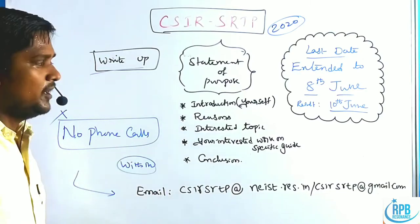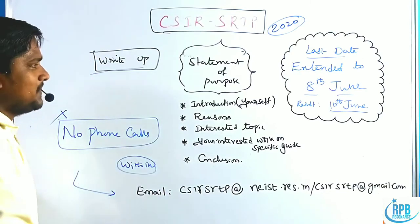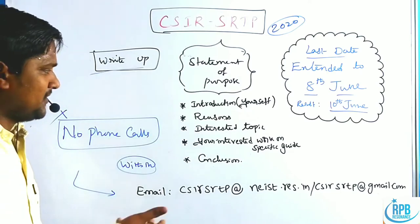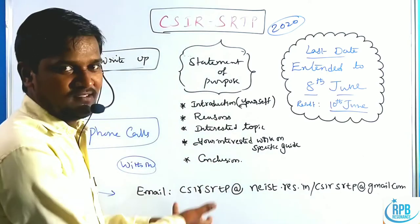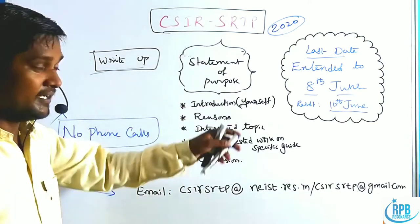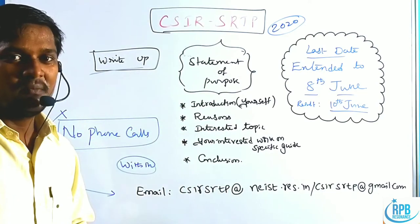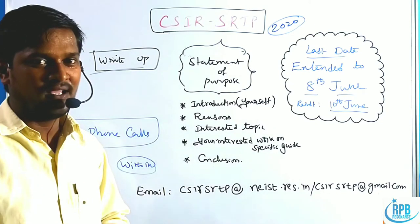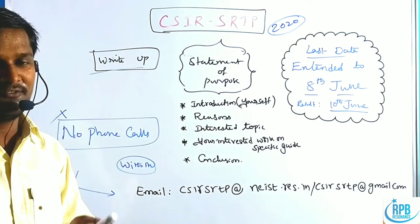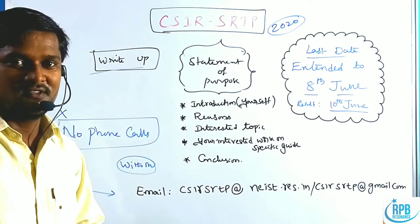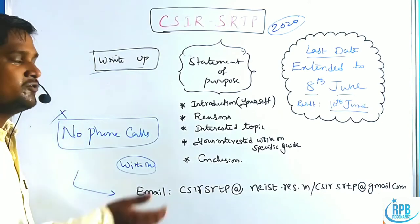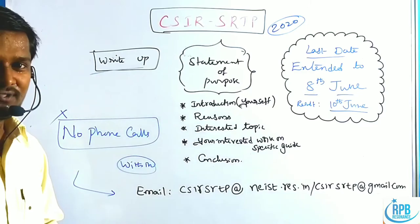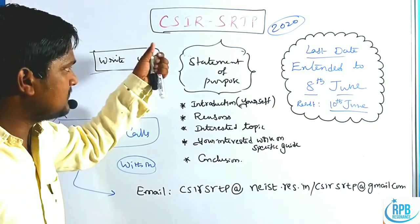The statement of purpose contains five main basic paragraphs. The first one is an introduction — mention your name, where you are from, where you are doing your previous work or what your study is. The second paragraph covers your reasons for choosing the CSIR SRTP summer research training program.